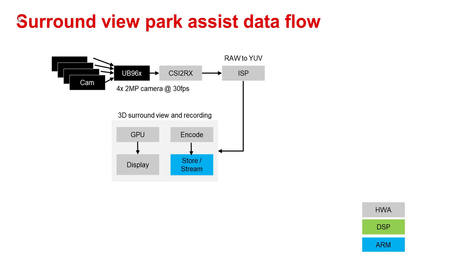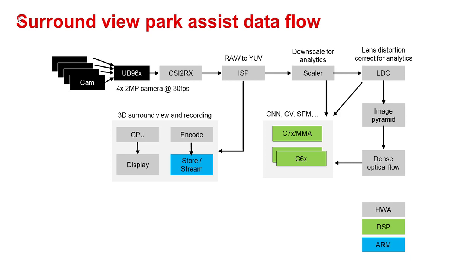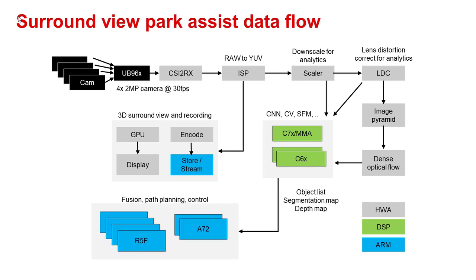In parallel, the ISP data is also sent for analytics for park assist. First, we do some pre-processing using VPAC and DMPAC hardware engines. The data is downscaled using the hardware scaler from VPAC. The fisheye lens distorted data is then corrected using the lens distortion correction hardware from VPAC. Next, the data is fed to the dense optical flow engine in DMPAC. The dense optical flow engine gives pixel-level motion information, which is used by analytics algorithms like depth using structure from motion and motion segmentation. This pre-processed data is then fed to C7X, MMA, and C66 for CNN processing and computer vision algorithms. The output after these algorithms is typically object and semantic information like location of pedestrians, vehicles, lanes, and traffic signs and depth map.